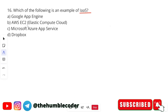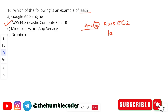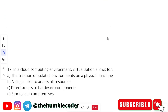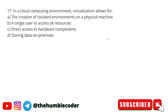Which of the following is an example of IaaS? Options are Google App Engine, AWS EC2 (Elastic Compute Cloud), Microsoft Azure App Service, and Dropbox. The correct answer is option B — AWS EC2. AWS EC2 is an example of IaaS, and you should remember that.